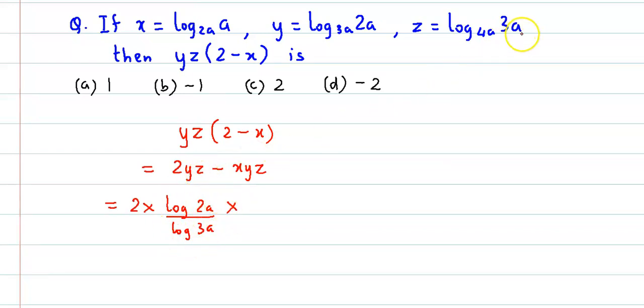Into z which is log 3a to the base 4a. Again we'll use change of base theorem, so this becomes log of 3a upon log of 4a.